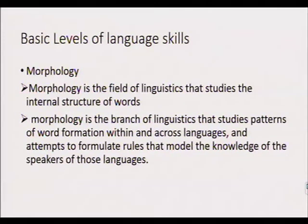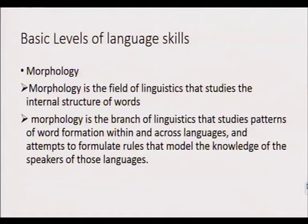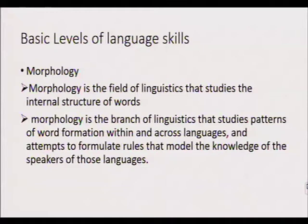Then we have morphology. Morphology studies the internal structure of words — how words are formed. A morpheme is the smallest unit of a word. So how do we join these small units to form words? You have seen in your course things like prefixes and suffixes — those small groups of letters we add to form words. Morphology also deals with patterns of word formation across languages and formulates rules, for example, words that take -es for plurals versus just -s.